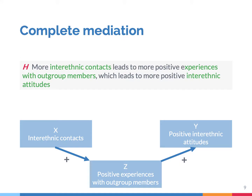The nice thing about conceptual models is that you can use them to present more complex ideas in a very straightforward way. Suppose we argue that more interethnic contacts leads to more positive experiences with outgroup members, which leads to more positive interethnic attitudes. The relationship between X and Y is now more complex because we add another concept, Z, that is mediating the two. This theoretical variable Z is called a mediator. If the impact of X on Y is completely accounted for by this third variable Z, such that there is no other way that X affects Y than via Z, then we call this complete mediation.